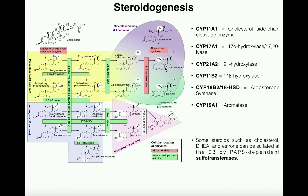Corticosterone can be processed further by the mitochondrial enzyme aldosterone synthase into the mineralocorticoid aldosterone, which is involved in salt and water retention at the kidneys. Aldosterone synthase first hydroxylates position 18 — hence it is sometimes called CYP11B2 — and then an 18-hydroxysteroid dehydrogenase activity oxidizes that hydroxyl group into an aldehyde. Aldosterone gets its name from this aldehyde group.